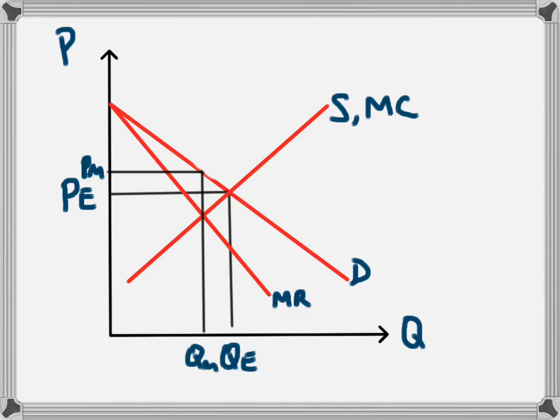So under perfect competition, we have the equilibrium price of PE and the equilibrium quantity of QE. But by operating as a monopoly, we'll see that the profit maximising level will lead to the business restricting the amount of product which it sells, which allows it to increase the price in which it sells it at. So the monopoly will sell its products at PM and sell QM of those products.